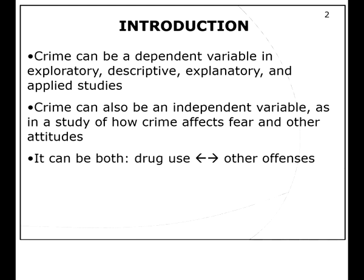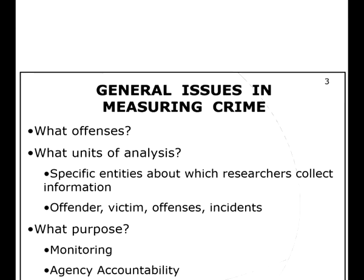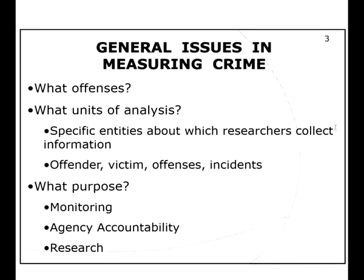Crime can be an independent variable or a dependent variable depending upon what you want to do — it can also be both. For example, drug use can predict other crimes, since drug use is a crime in itself. There are some general issues with measuring crime: you want to think about what offenses to include, what units of analysis to use — individual level, offenses, or incidents. The UCR also has a county-level file.